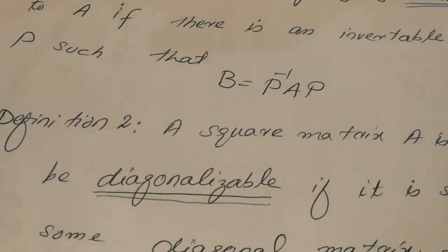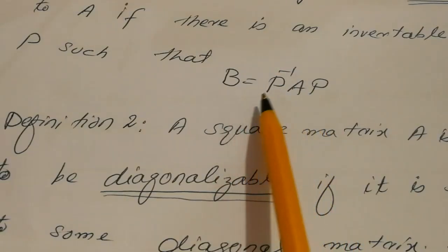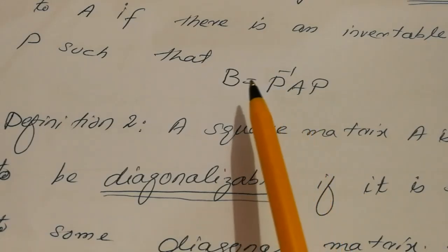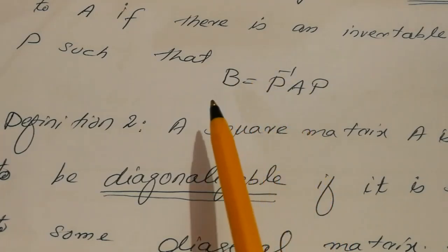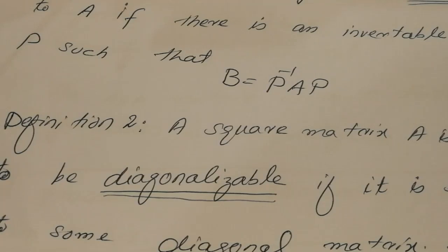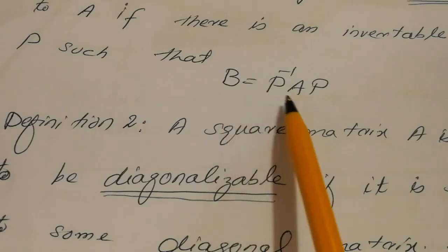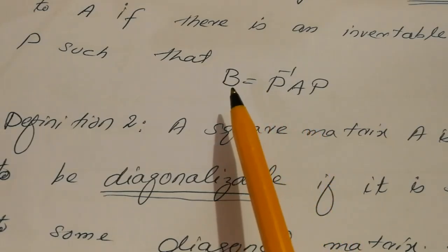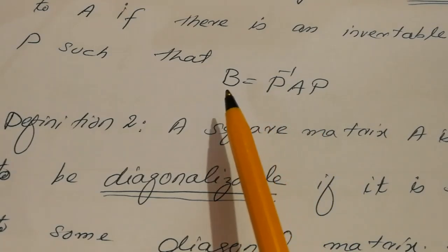We can reap a lot of benefits from diagonalization. When we say that B is similar to A, we mean there are many properties common in A and B. When we diagonalize a matrix A, B is replaced with a diagonal matrix D. A diagonal matrix has non-zero diagonal entries and all other entries are zero. So D would be much simpler than A, and we can find all the properties of A easily using D.